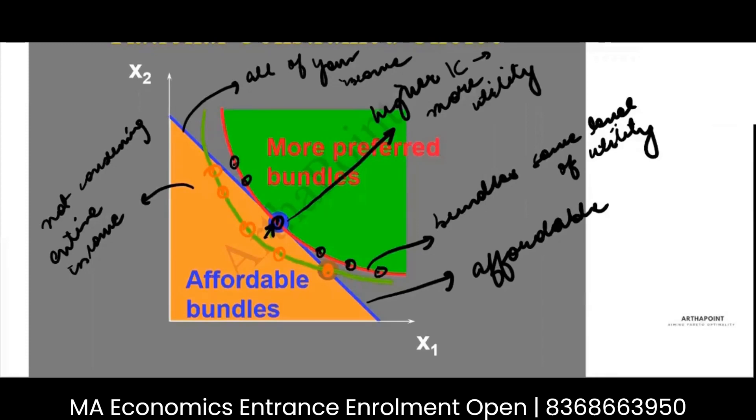But two, is also giving me higher utility because this is on a higher indifference curve. If I would have talked about my third indifference curve that we drew, this third indifference curve actually gives me more utility. Right? It lies in the preferred bundle region. This is not affordable.